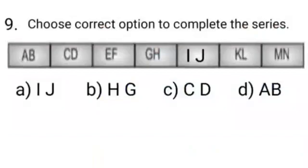Now let's read the given options. Option A is I, J which is correct. So we will put a tick on option A. Option B is H, G which is not correct. Option C is C, D which is not correct, and option D is AB which is not correct.